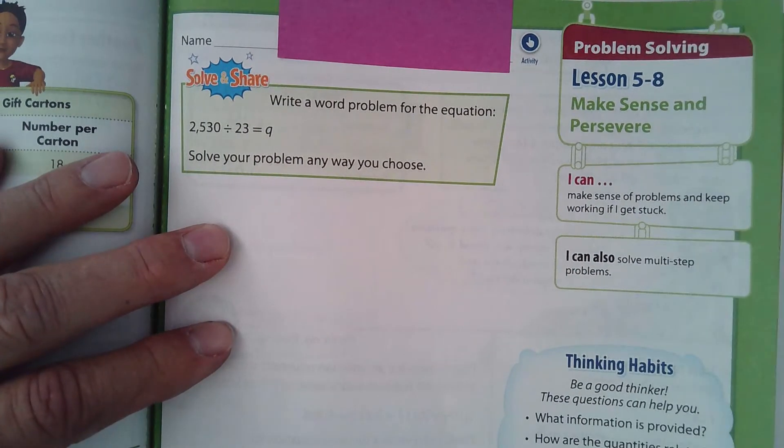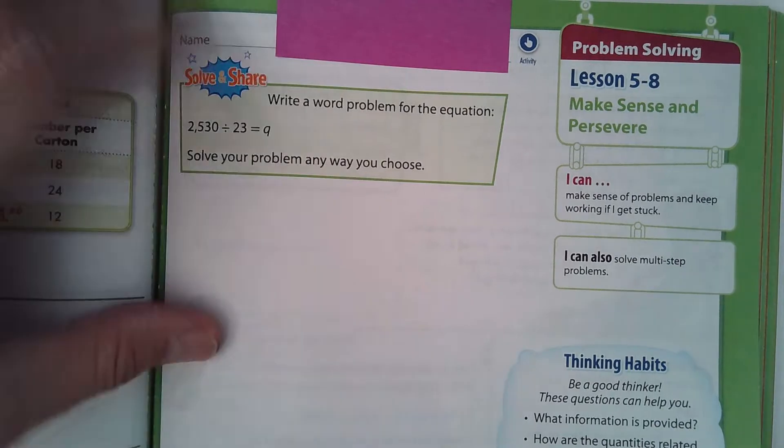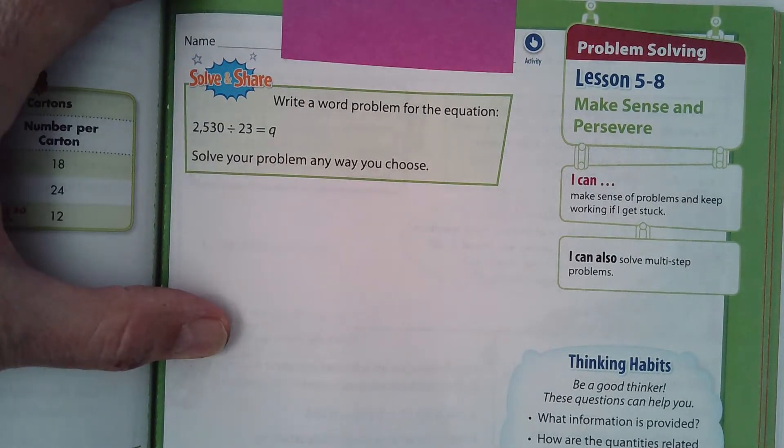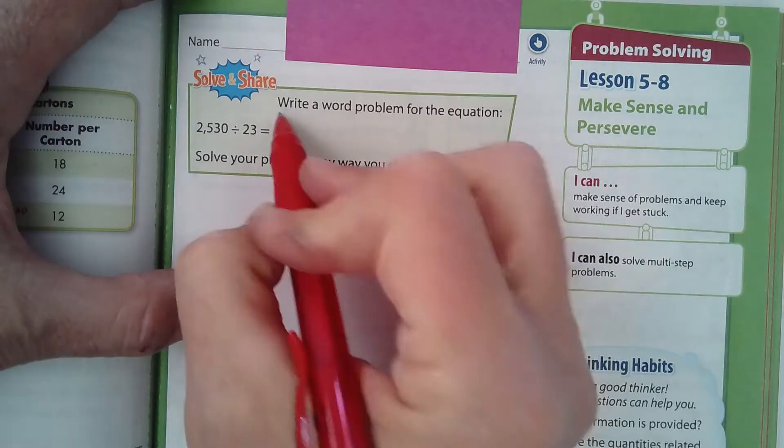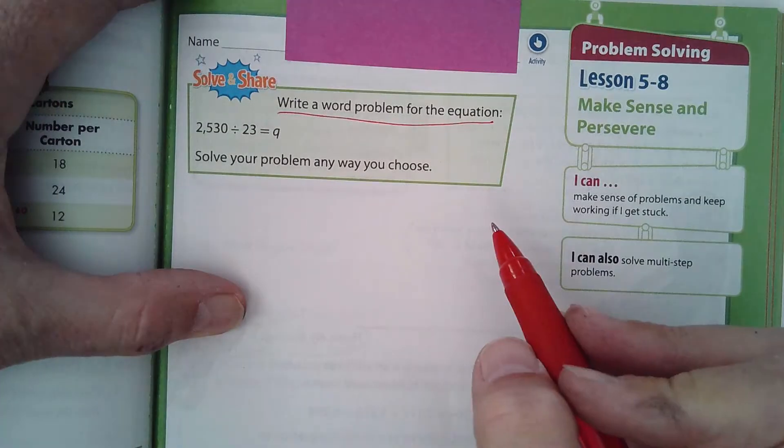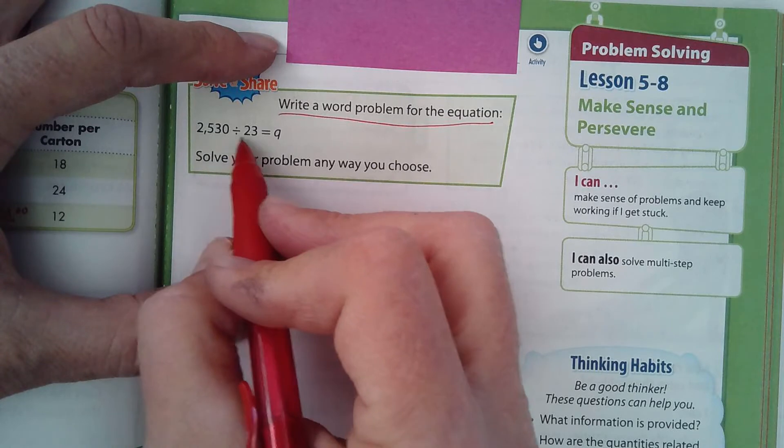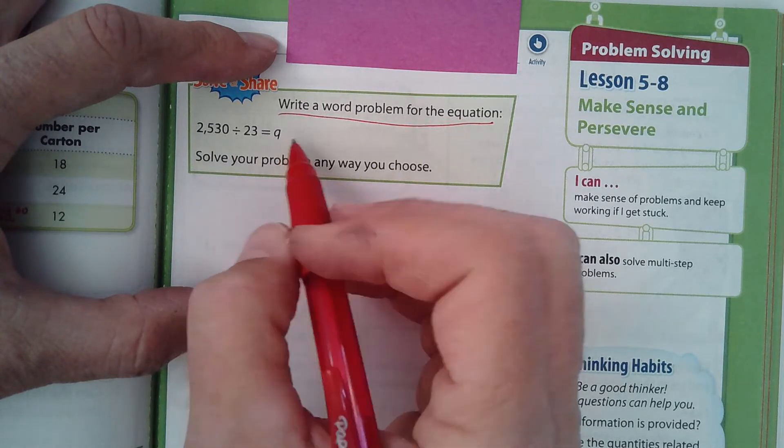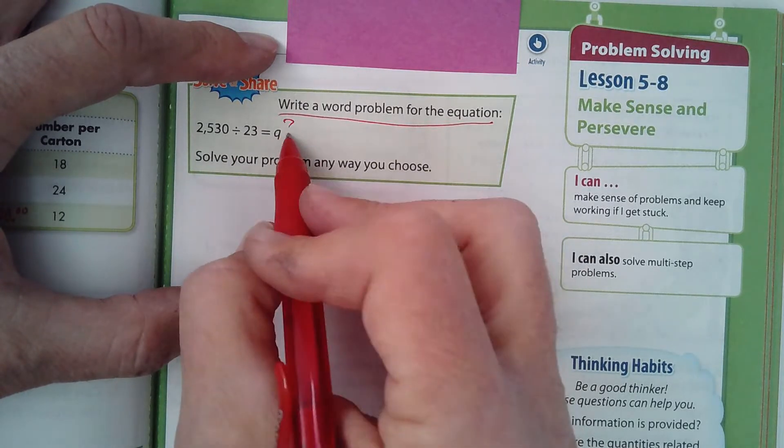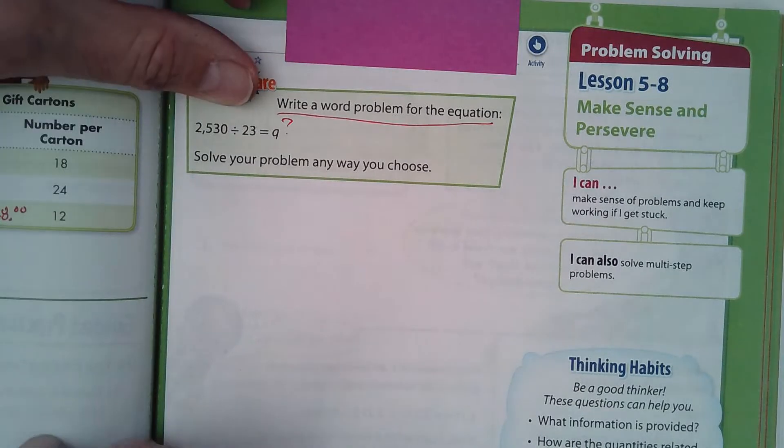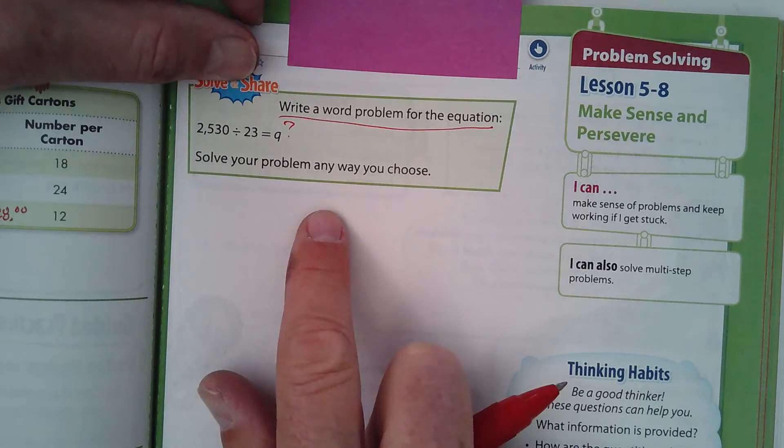But the first one here on page 209, it says write a word problem for the equation. Here's the equation: 2,530 divided by 23 equals Q. Well, Q would be the answer. We don't know what it is. So it says solve the problem any way you choose. Well, the first thing you need to do is write a word problem.